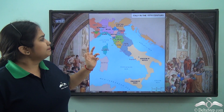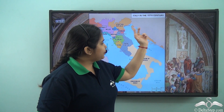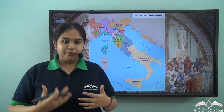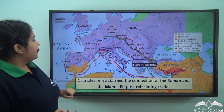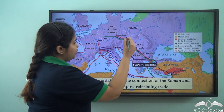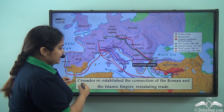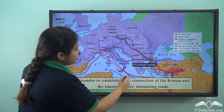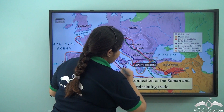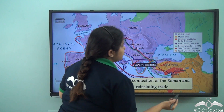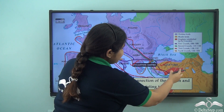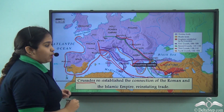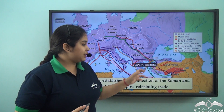Italy becomes the primary place where these ideas are being propagated. Now, when we look at this map, we see that various trade routes are being connected. We have the Byzantine Empire here and the Seljuk Turks or the Islamic Empire in this area, and there is a constant clash — which we already know about — called the Crusade, the Holy War.